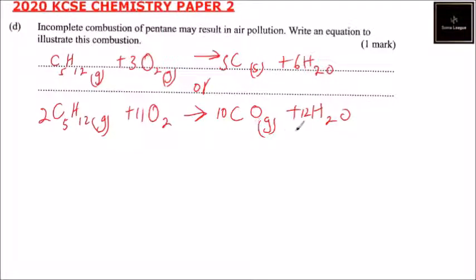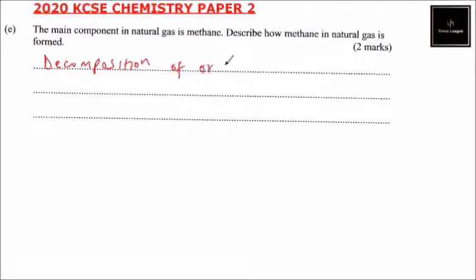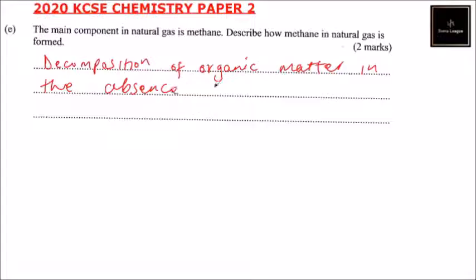Part E: the main component of natural gas is methane. Describe how methane in natural gas is formed. Methane is formed as a result of the decomposition, breakdown, or decay of organic matter in the absence of oxygen. By answering like that you will be able to get two marks.